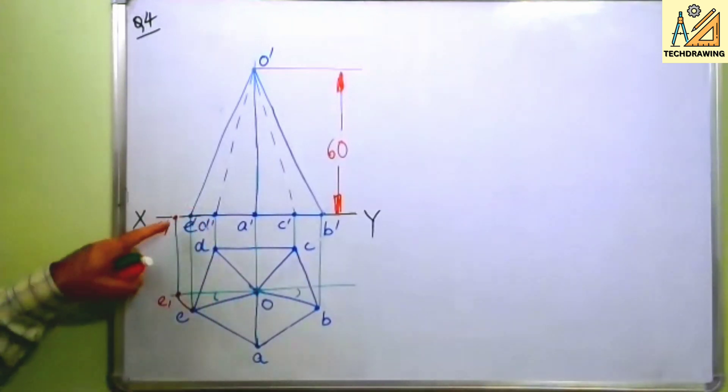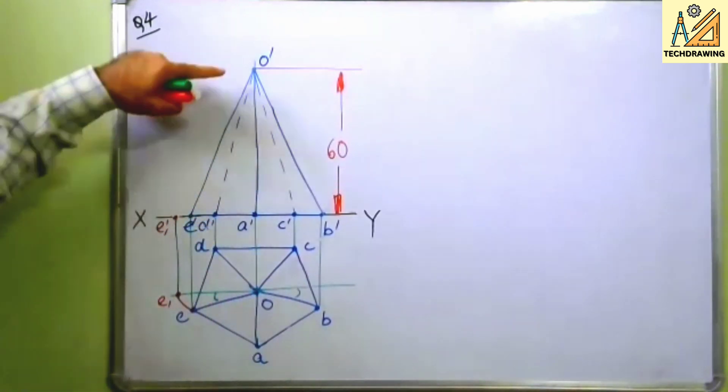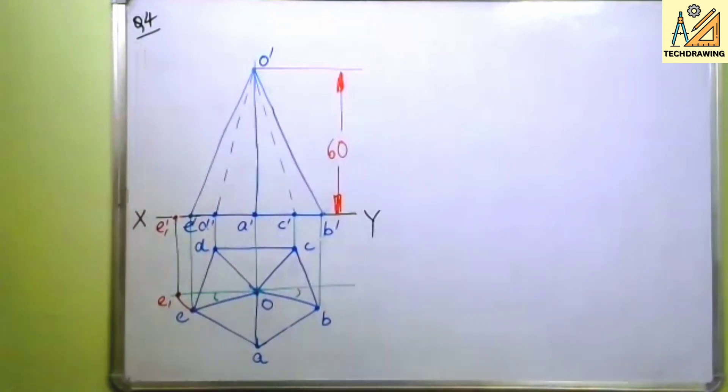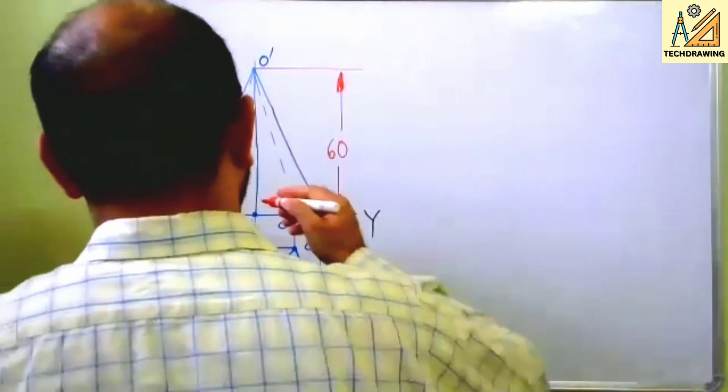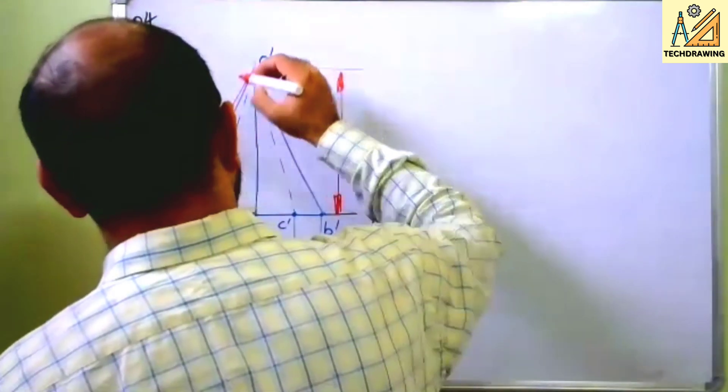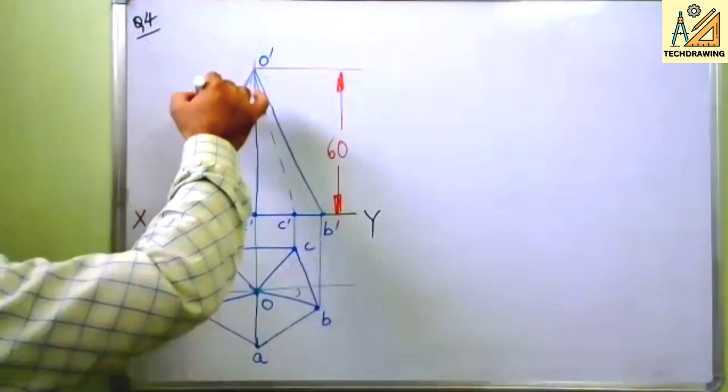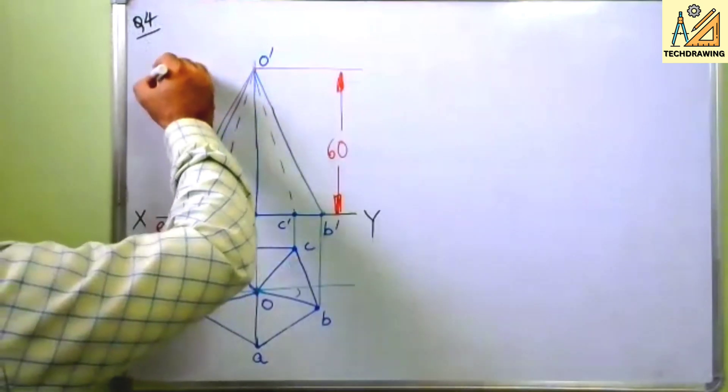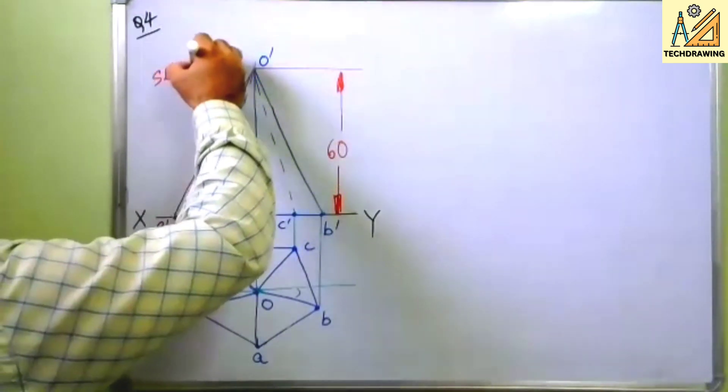Now you join this with O dash. I am doing it with red color like this. So now this in red color, this is your slant length or slant edge.